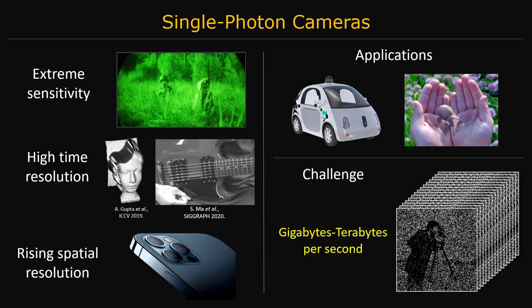However, one major challenge that arises for these cameras as their resolution increases are the unmanageable data rates that they output, since they are capturing one photon per pixel at a time at extremely fast rates.